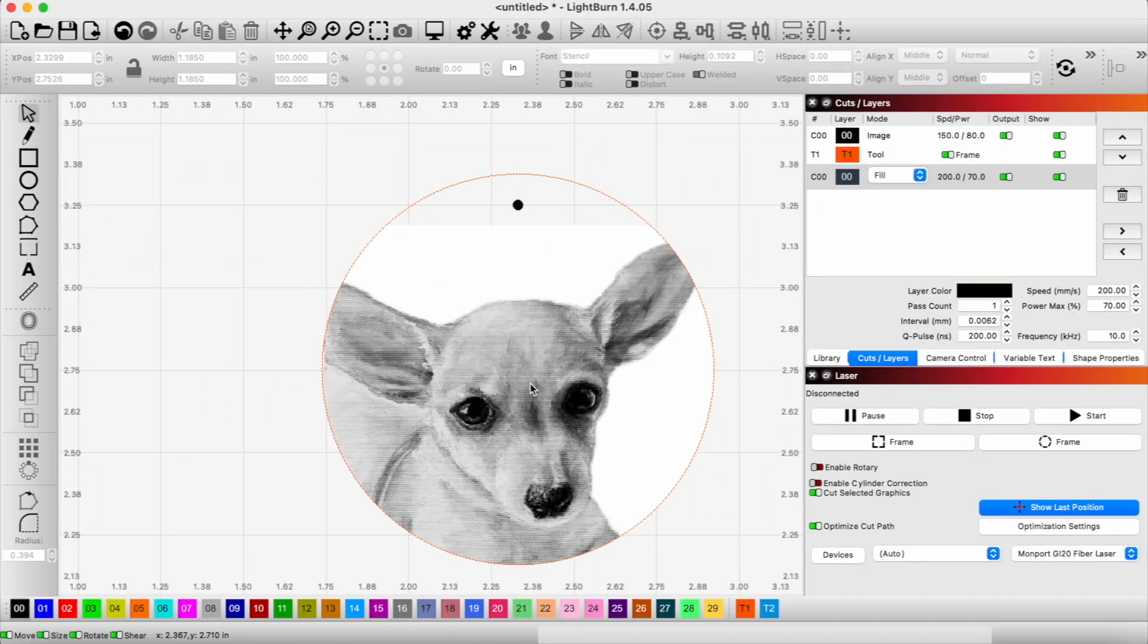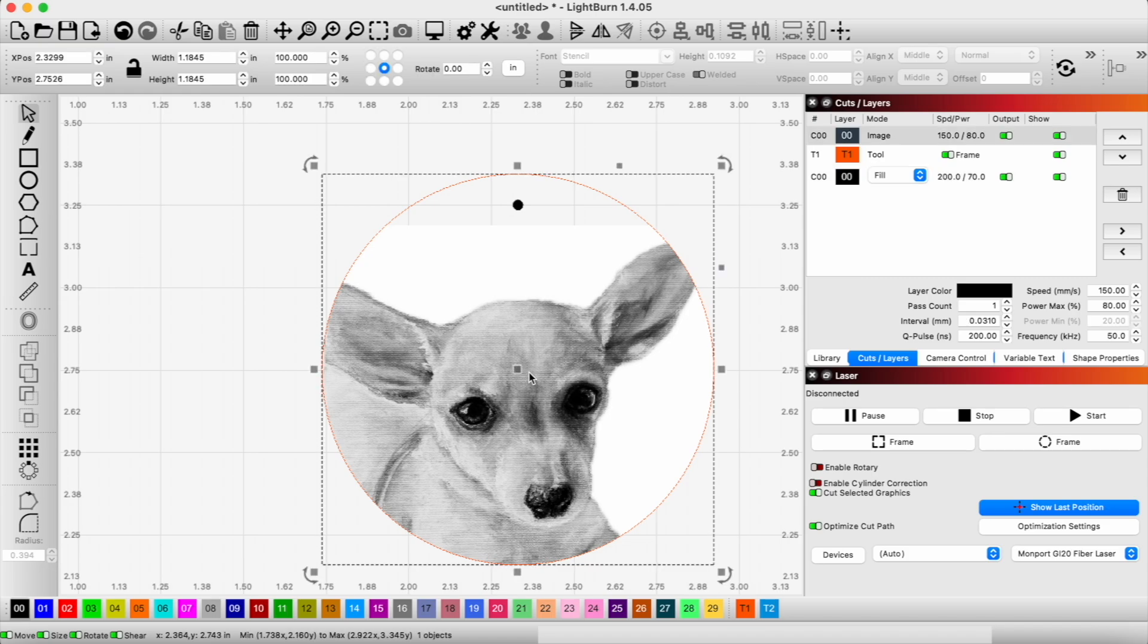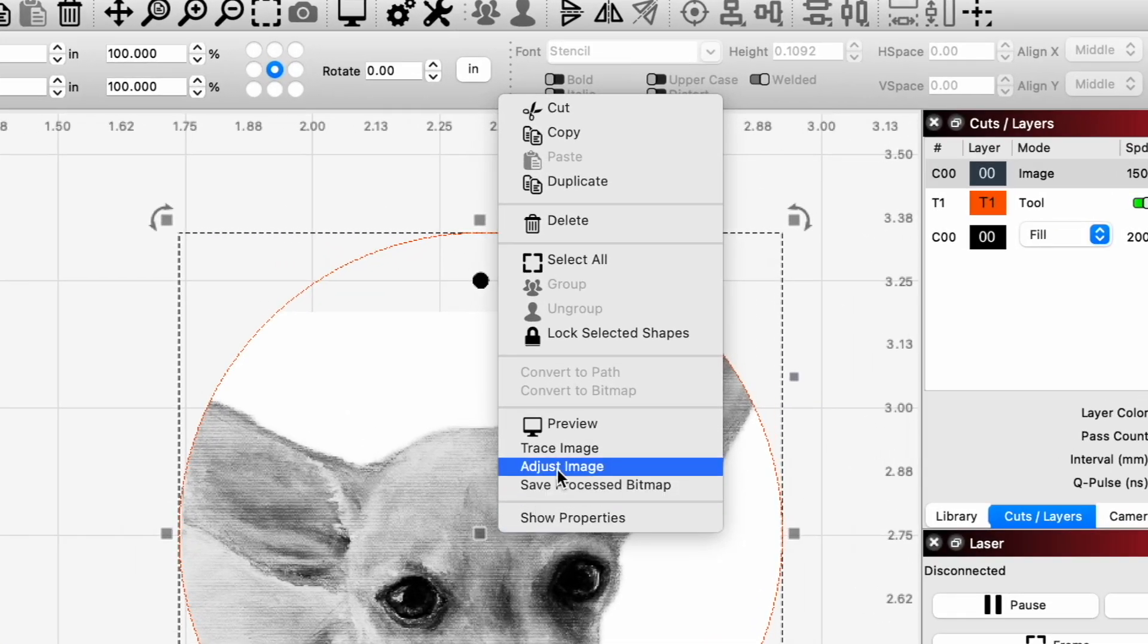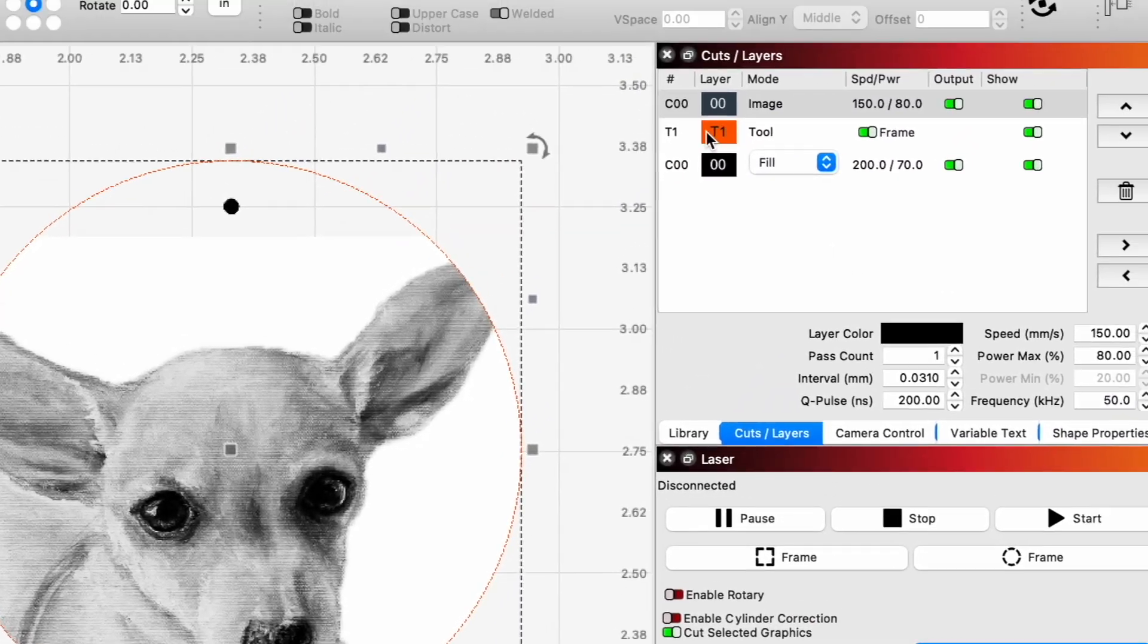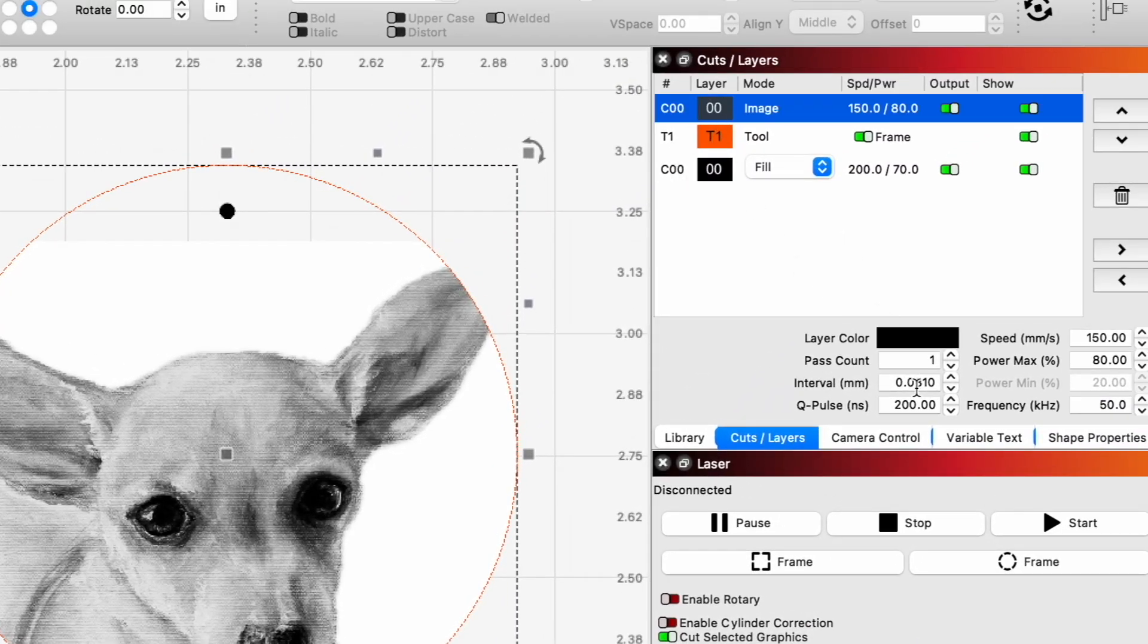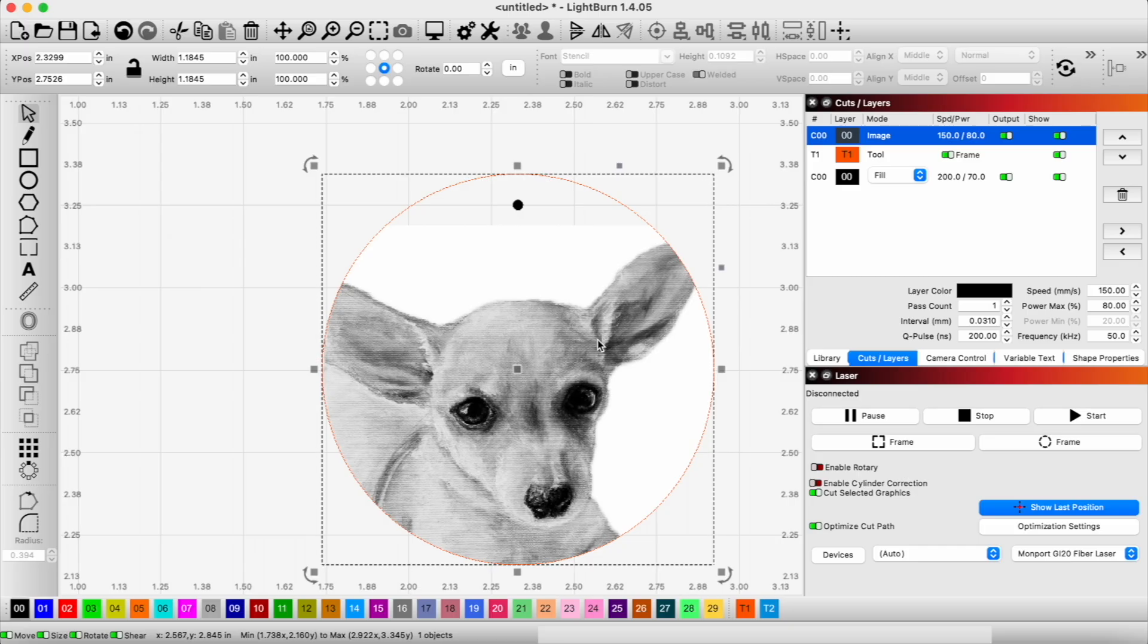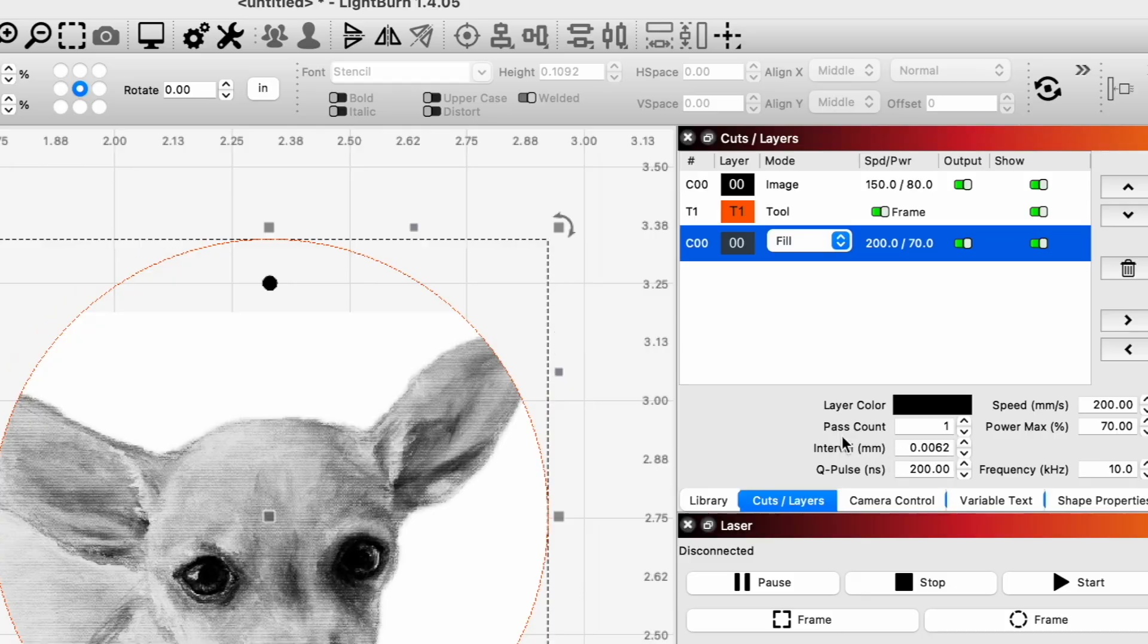And now it's just about getting the settings right. So what we're going to do is click on our image here, right-click, and adjust image. We're going to use this Jarvis. Let's see what dots per inch we want. Let's see what we have. Image settings, 0.3. Actually, it will probably give us a lot of good detail. So I'm going to leave it like that for our fill. That is also good.